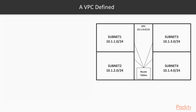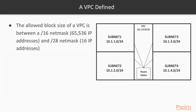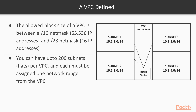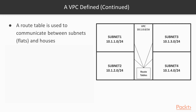By default, a VPC is allocated a slash 16 address, which gives you roughly 65,536 IP addresses to play with. You can go as small as a slash 28. In the exam, you'll often be asked what the default range is or what masks you can use — slash 16 to slash 28 is the answer. A net mask describes what parts of an IP range is the network and what part is the host. You can have up to 200 subnets, and you use the route table to allow communication between all subnets and in and out of the VPC itself.